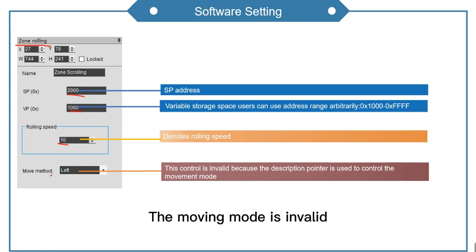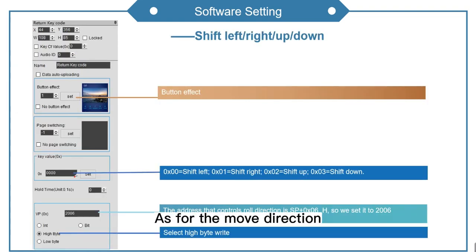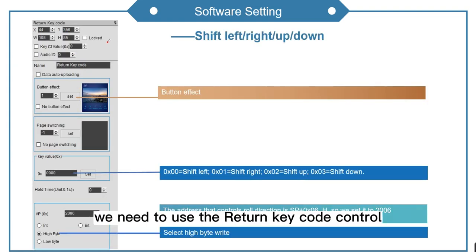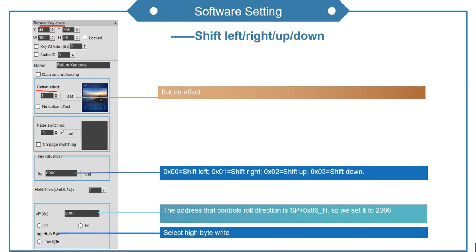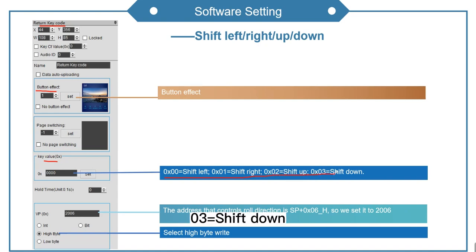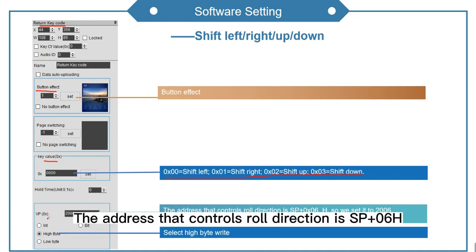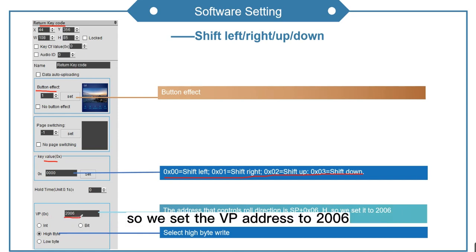The moving mode is invalid. We can choose the default setting. As for the move direction, we need to use the return key code control. Select the pre-designed button effect image. About key value: 00 equals shift left, 01 equals shift right, 02 equals shift up, 03 equals shift down. The address that controls roll direction is SP plus 06H, so we set the VP address to 2006.